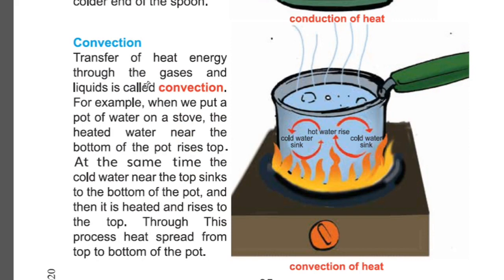Convection. Transfer of heat energy through gases and liquids is called convection. You must remember that heat transfers by this process when it needs to transfer through liquid or gases. For example, when we put a pot of water on a stove, the heated water near the bottom of the pot rises to the top. At the same time, the cold water near the top sinks to the bottom of the pot, and then it is heated and rises to the top. Through this process, heat spreads throughout the pot.